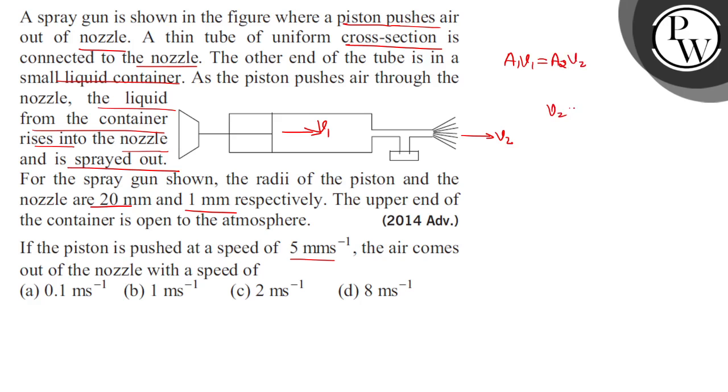According to this, the air speed will be A1 upon A2 into V1, so V2 equals A1 by A2 times V1. Now the area which we have given here is in terms of radii, so it's proportional to R1 upon R2